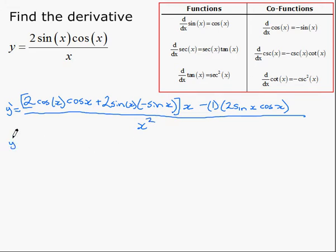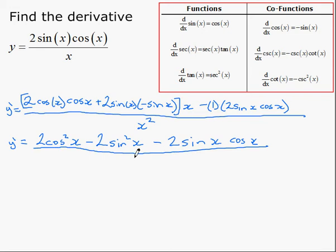So that's the whole derivative. Now we just need to simplify it a little. That's 2 cosine squared minus 2 sine squared. So 2 cos squared x minus 2 sine squared x. Minus 2 sine x cosine x. All over x squared.